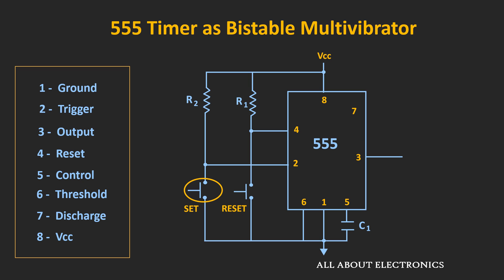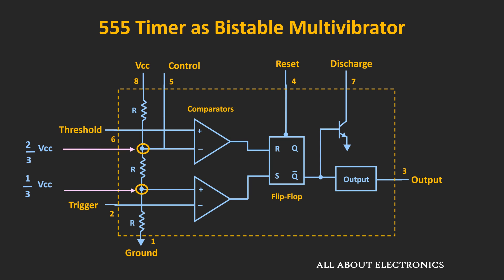Now let's see what happens when we press the SET pin. Whenever the SET pin is pressed, then momentarily pin number 2 will get connected to the ground terminal, and hence the voltage at the trigger pin will go below the reference voltage. That means the output of the second comparator will become logic high, and the output of the first comparator will be equal to logic zero. So at that time, S will be equal to 1 and R will be equal to logic zero, meaning this flip-flop will get set to logic one, and hence the output of the 555 timer will also get set to logic high.